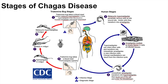When trypomastigotes are within the bloodstream, if that patient comes into contact with another triatomine bug, that bug can take a blood meal and itself become infected with the trypomastigotes. Once the triatomine bug ingests those trypomastigotes, epimastigotes are formed within the midgut. The epimastigotes multiply within the midgut, and once they enter the hindgut they become metacyclic trypomastigotes. After they are removed by defecation, another individual can be infected, and the cycle continues.